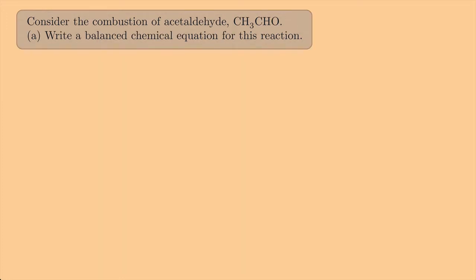First, we're going to write a balanced chemical equation. We have a combustion reaction. Combustion means burning in the presence of oxygen. So we're going to have acetaldehyde — CH₃CHO — burned in the presence of oxygen. Oxygen is one of the genuine diatomics; things that end in 'gen' or 'ine.' So oxygen, when it's on its own, is really going to be O₂.